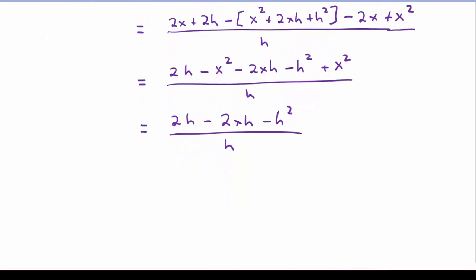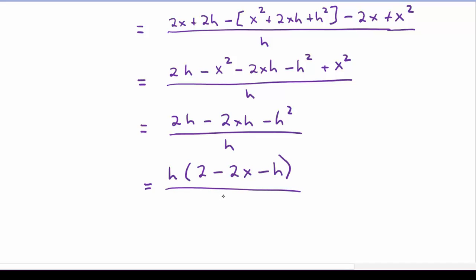We see in the numerator we can factor out an h, and we would have left 2 minus 2x minus h, divided by h. Of course that h in the numerator will cancel with the h in the denominator, and we're finally left with 2 minus 2x.